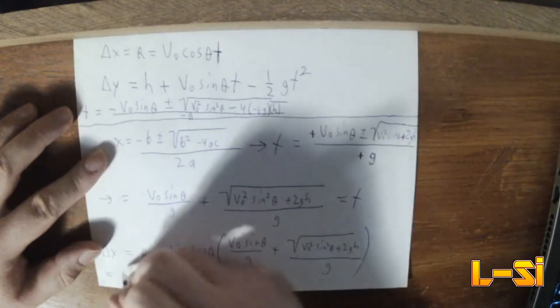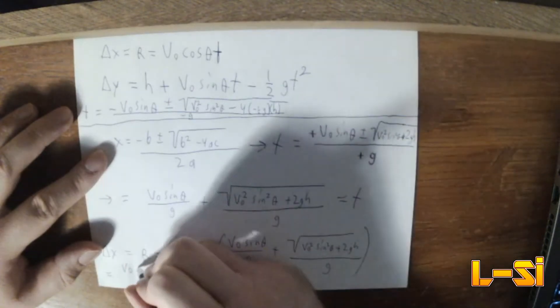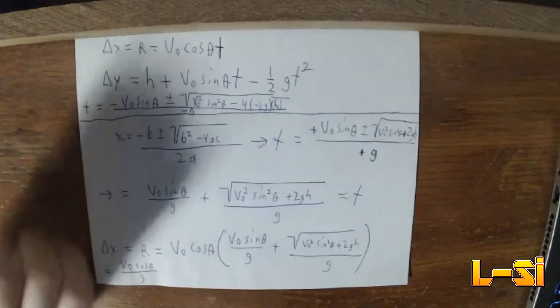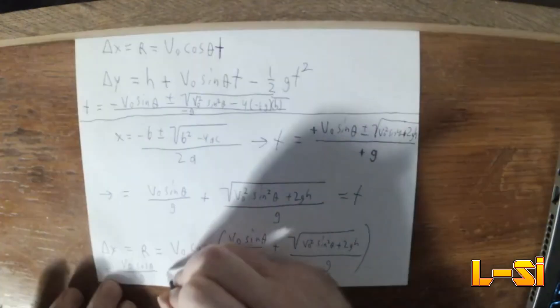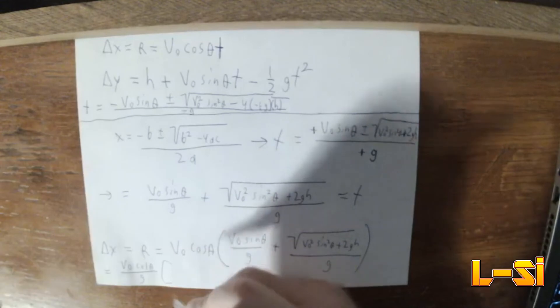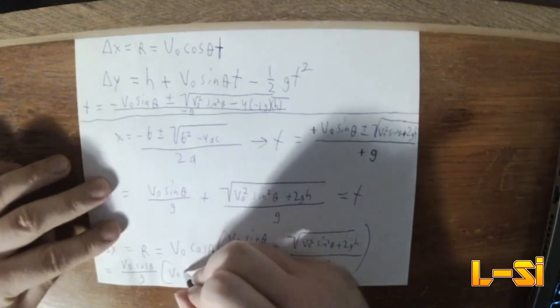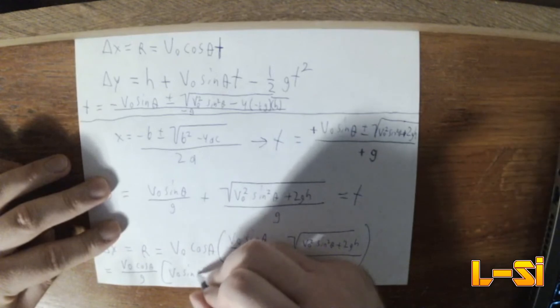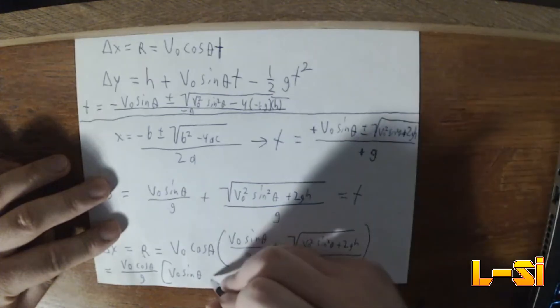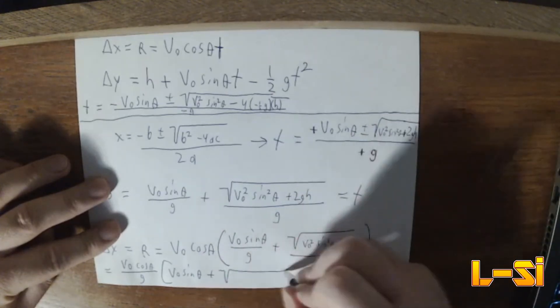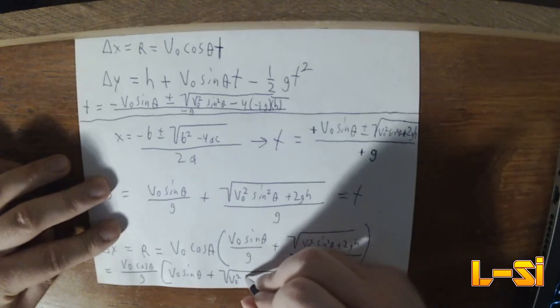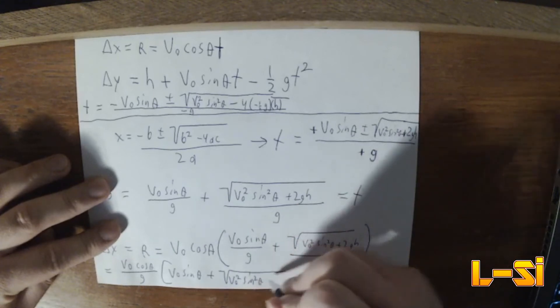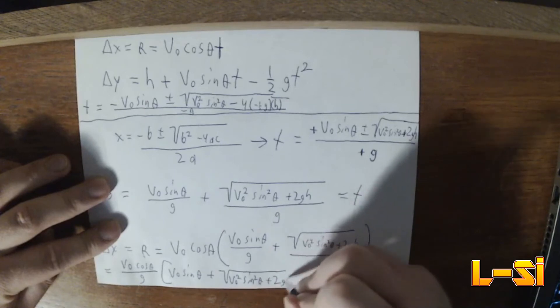Put it out here. So we have V-naught cosine of theta over G. And then we have V-naught sine of theta plus the square root of V-naught squared sine squared of theta plus 2GH.